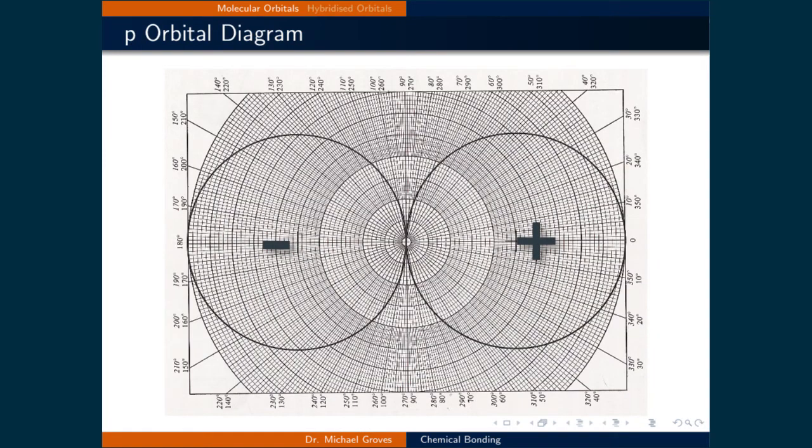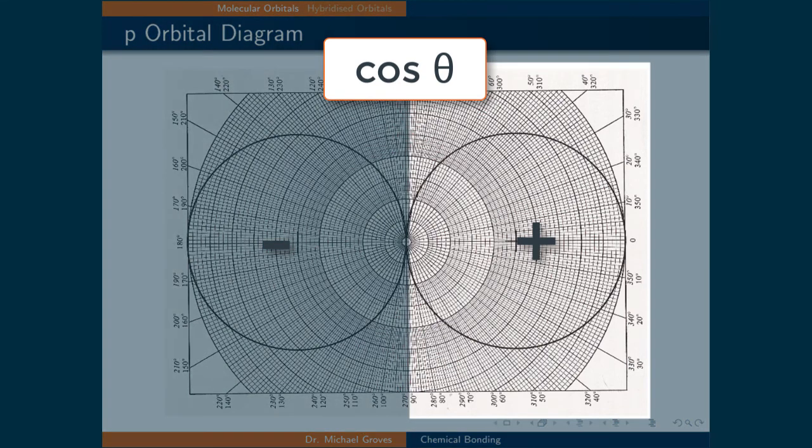Prior to examining the p-based molecular orbitals, let's briefly return to the shape of the p-orbital. When sketching the shape, we can plot a cosine theta term on polar paper to get the familiar dumbbell shape. The cosine of angles between 0 and 90 degrees will result in a positive number, hence that region is denoted with a plus sign.